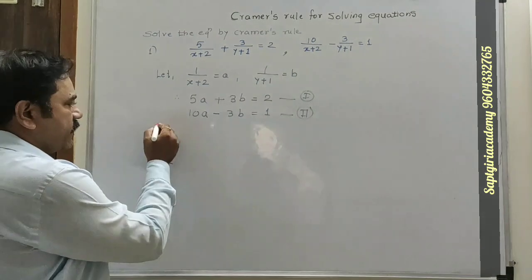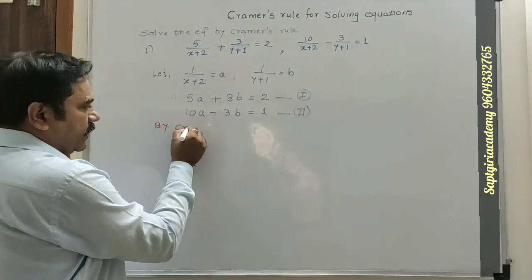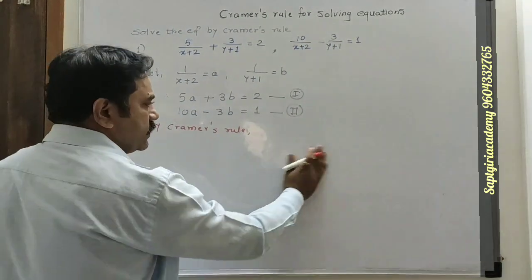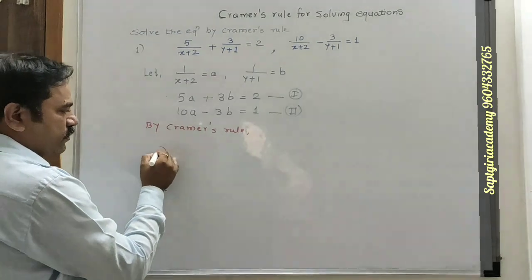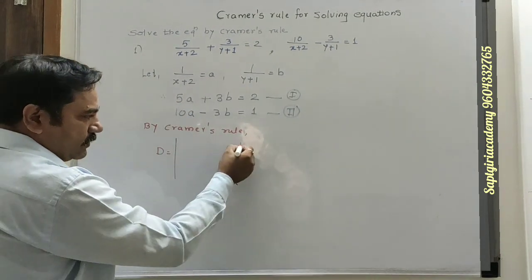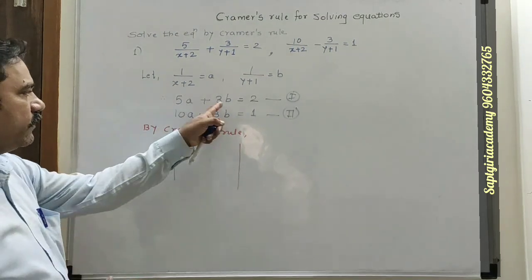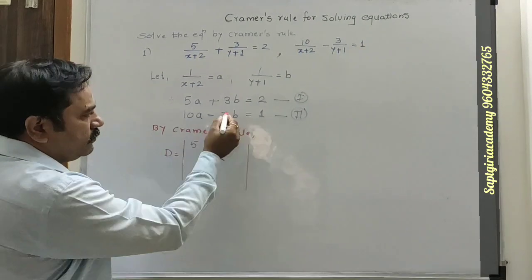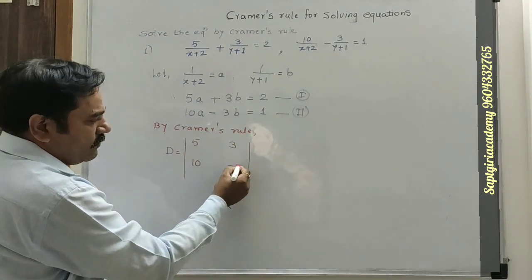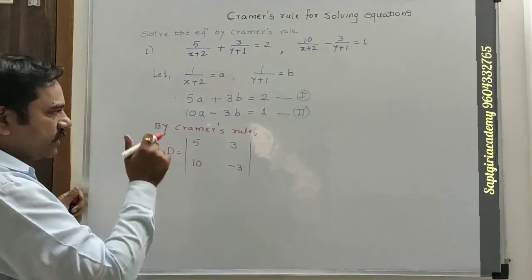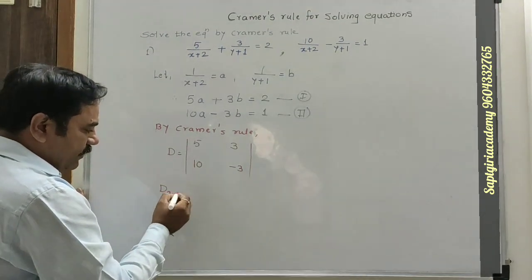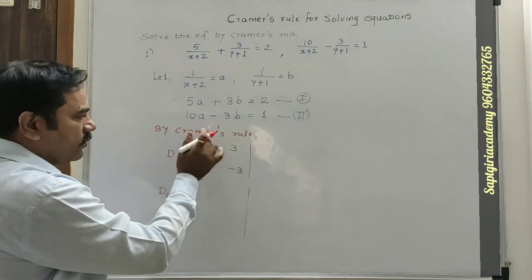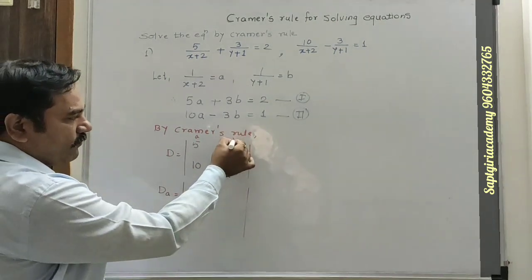Now by Cramer's Rule, we will arrange the determinants. First, capital D is the determinant of coefficients of variables only. The coefficients of variables are 5, 3, 10, and minus 3. For the first variable, we will take determinant Da, which has the first column (of a) and the second column (of b).